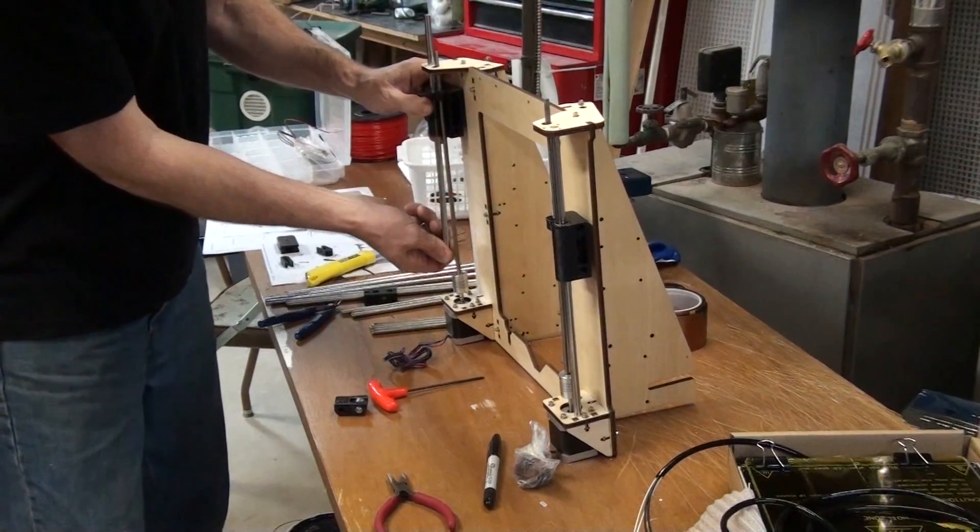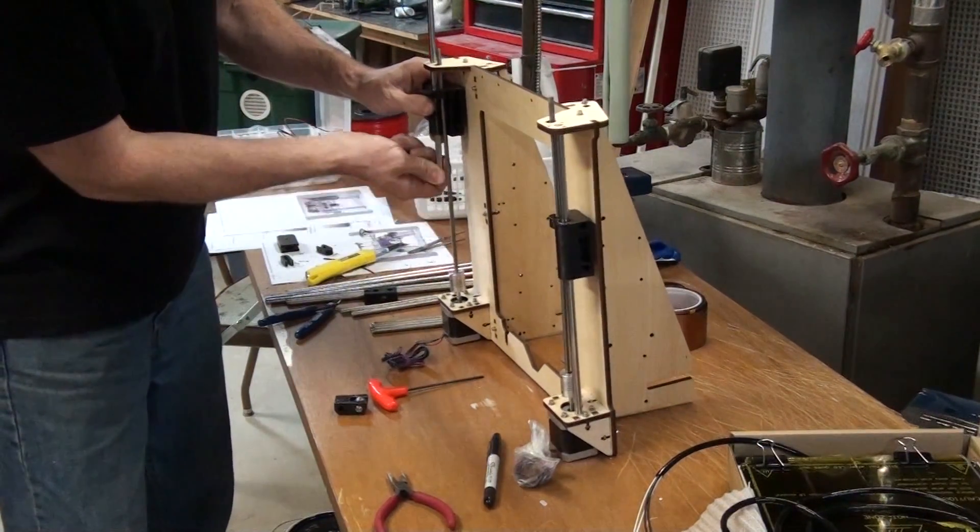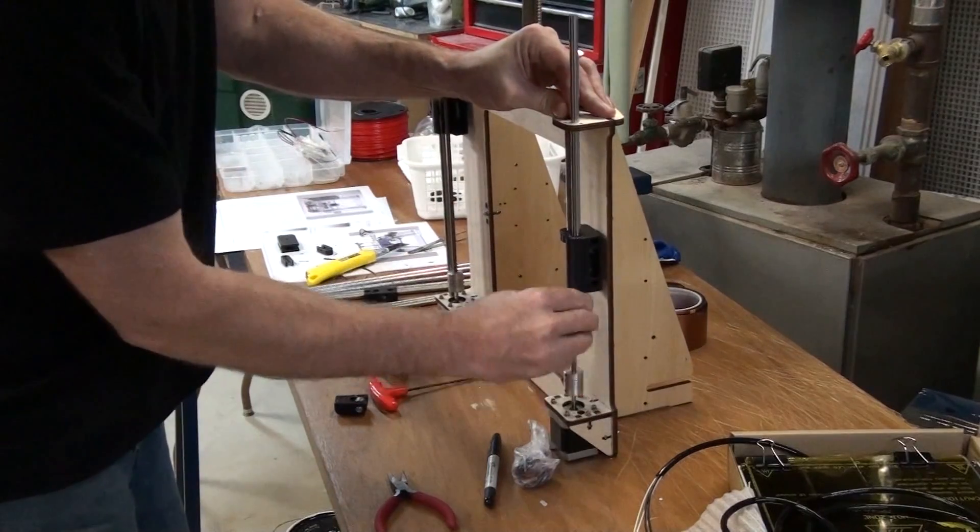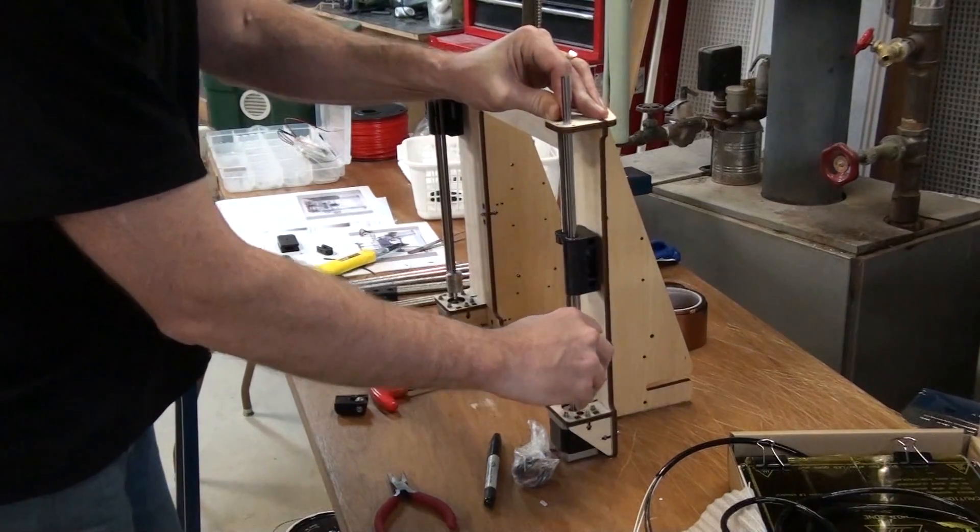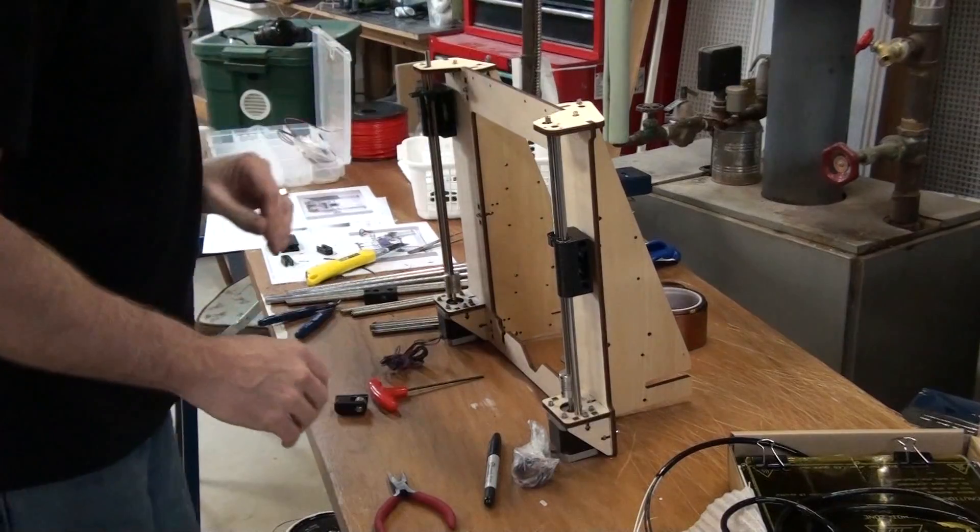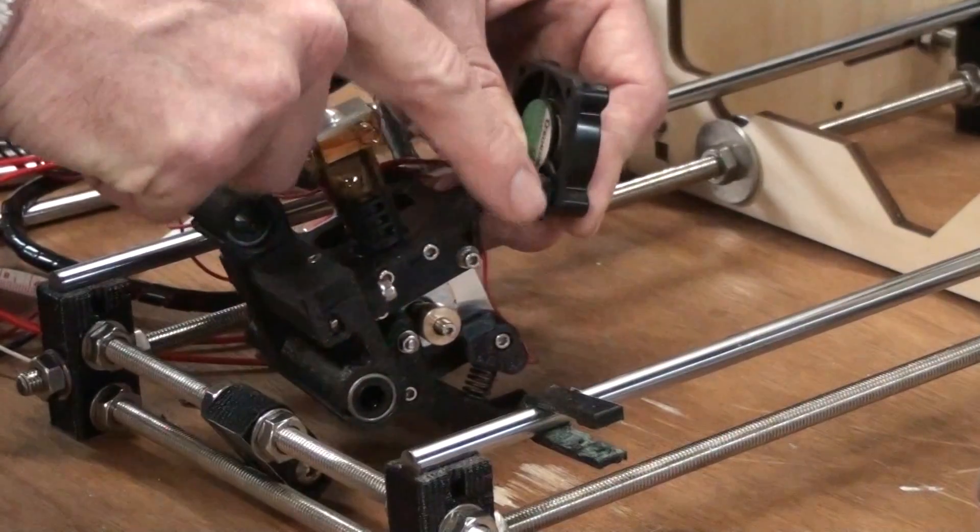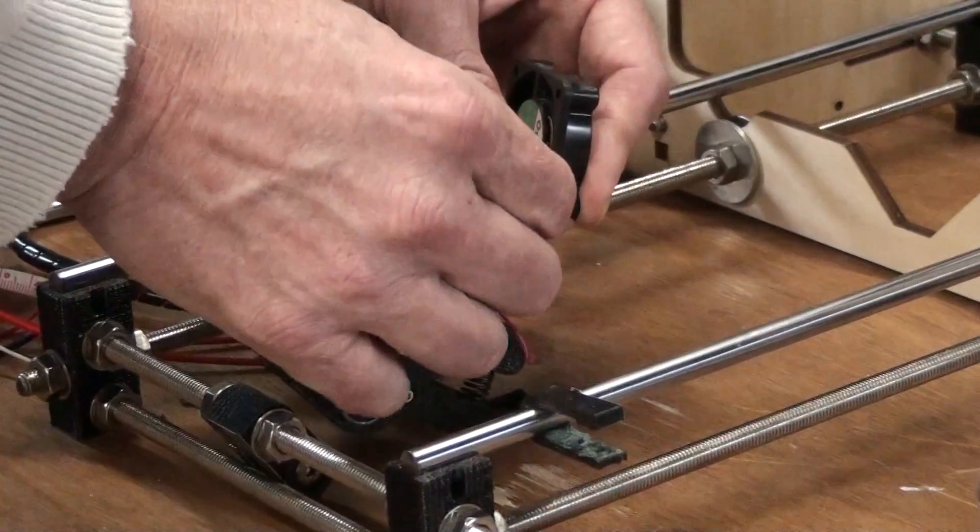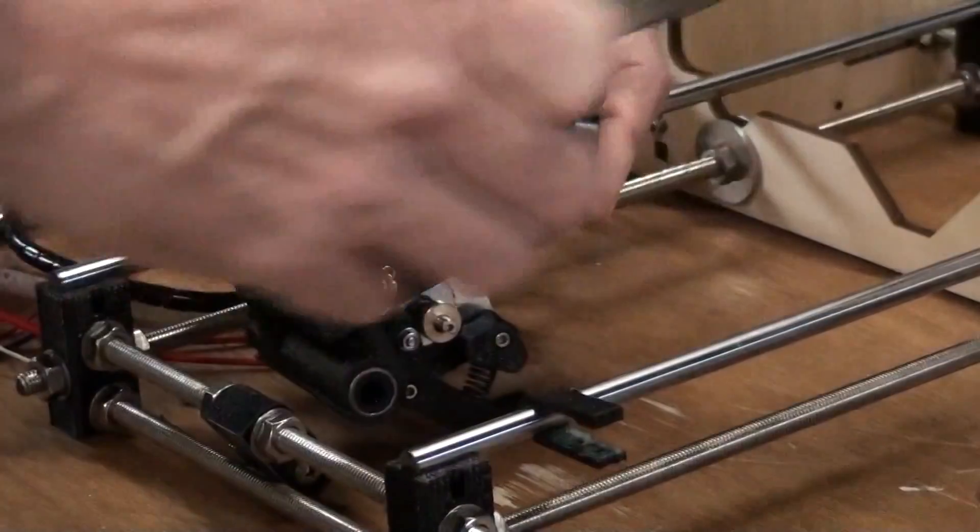Carefully slide the guide rods into the linear bearings that are pressed into the 3D part. They might be a little stiff at first, but they seem to work themselves in with time. At this point, you can attach the fan to the extruder. It's already wired in and just needs a couple of bolts to hold it together.